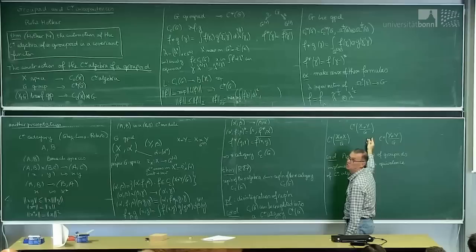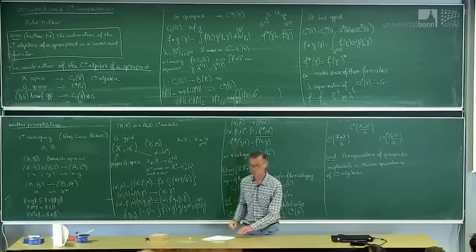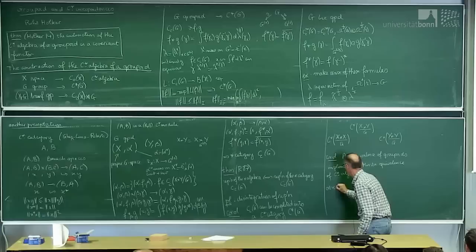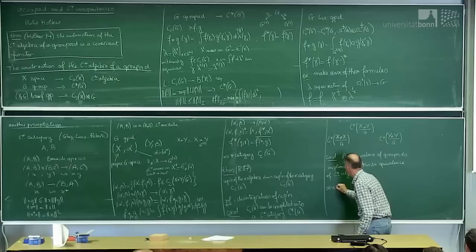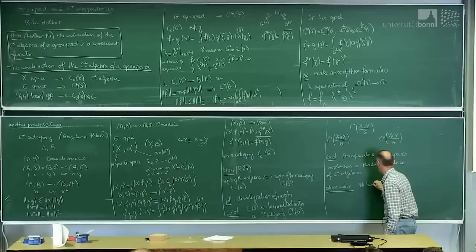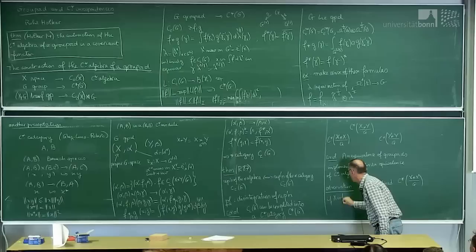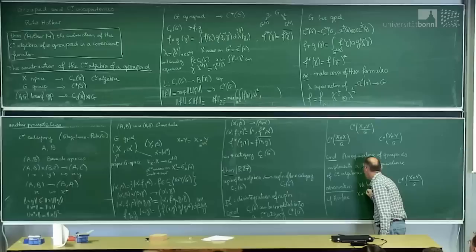An equivalence of groupoids implements an equivalence of C*-algebras. Morita equivalence requires the C*-module to be full — you want the inner product to generate the whole algebra. The fullness condition is realized when X and Y are free and proper G-spaces.